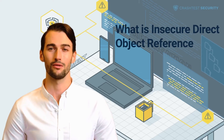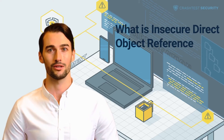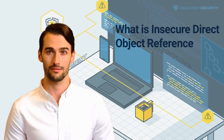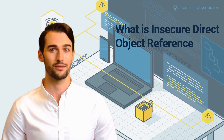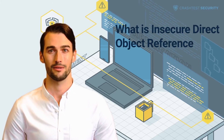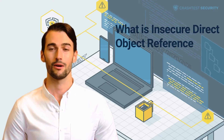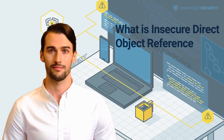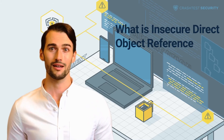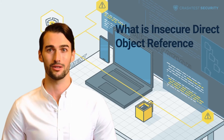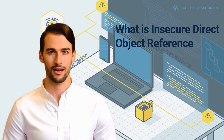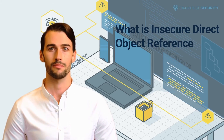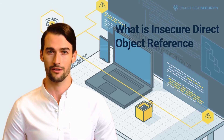Since object references expose data of the application's internal implementation details, the consequences of the attack can be severe. Some impacts of a successful IDOR attack include unauthorized access to sensitive data. Object references often include database IDs, which attackers can access to expose sensitive information about the application users. The unauthorized user can also use database entries to prepare malicious SQL payloads for further attacks.